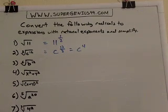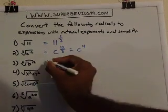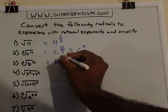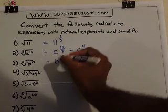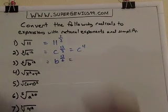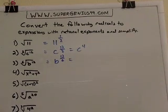Let's look at the next one. B to the 12th. The index is 6, so 6 is the denominator. 12 divided by 6 is 2.